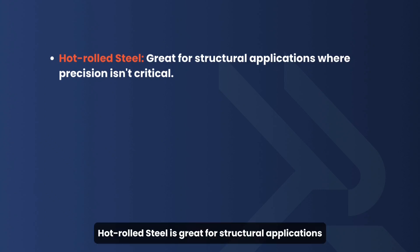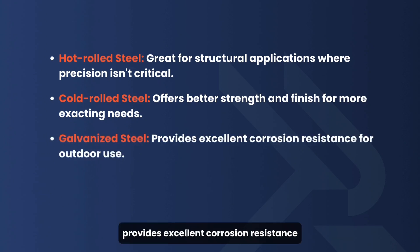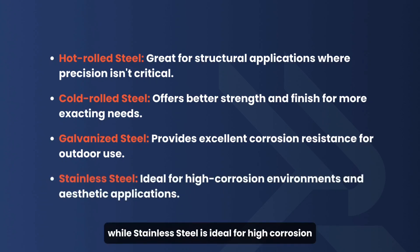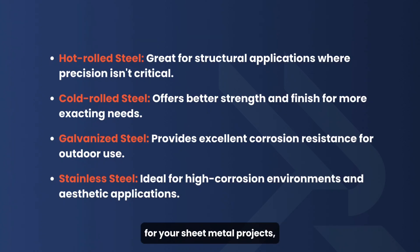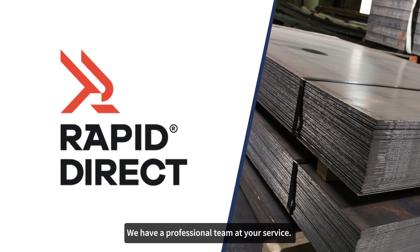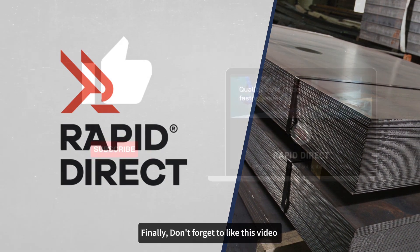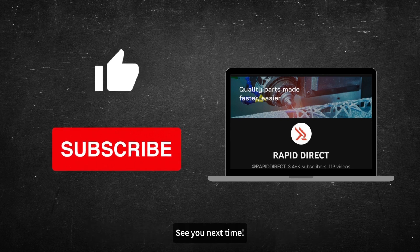To summarize: hot rolled steel is great for structural applications where precision isn't critical; cold rolled steel offers better strength and finish for more exacting needs; galvanized steel provides excellent corrosion resistance for outdoor use; while stainless steel is ideal for high corrosion environments and aesthetic applications. If you're looking for a one-stop manufacturing solution for your sheet metal projects, RapidDirect is your reliable partner — we have a professional team at your service. Don't forget to like this video and subscribe to our channel for more insightful content. See you next time!